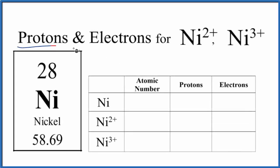In this video, we'll find the number of protons and electrons for Ni2+, Ni3+, and for neutral nickel. This is the nickel 2-ion, nickel 3-ion, and then neutral nickel.